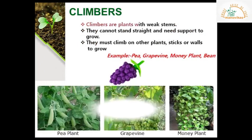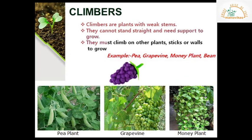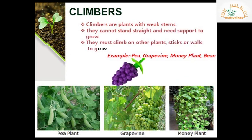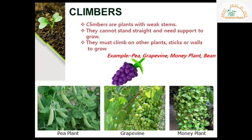Climbers are plants with weak stems. They cannot stand straight and need support to grow. They must climb on other plants, sticks, or walls to grow. Examples include the pea plant, grapevine, money plant, and bean plant.